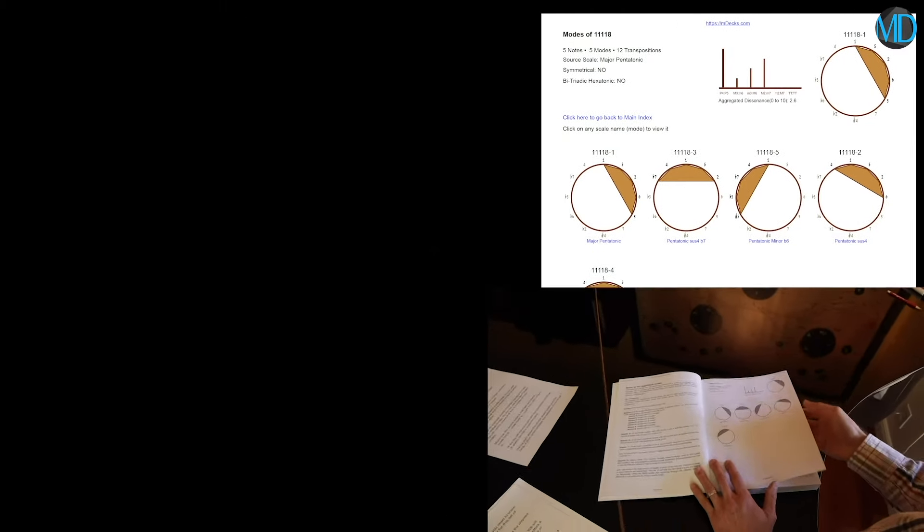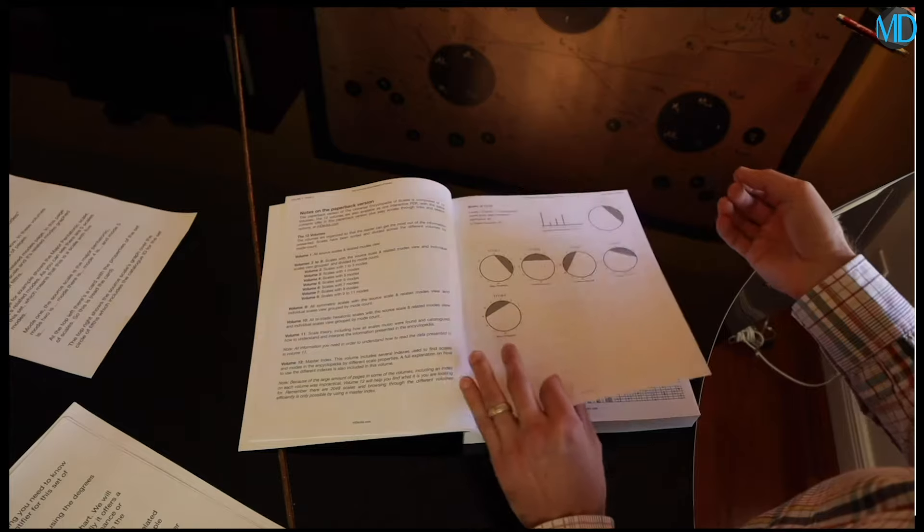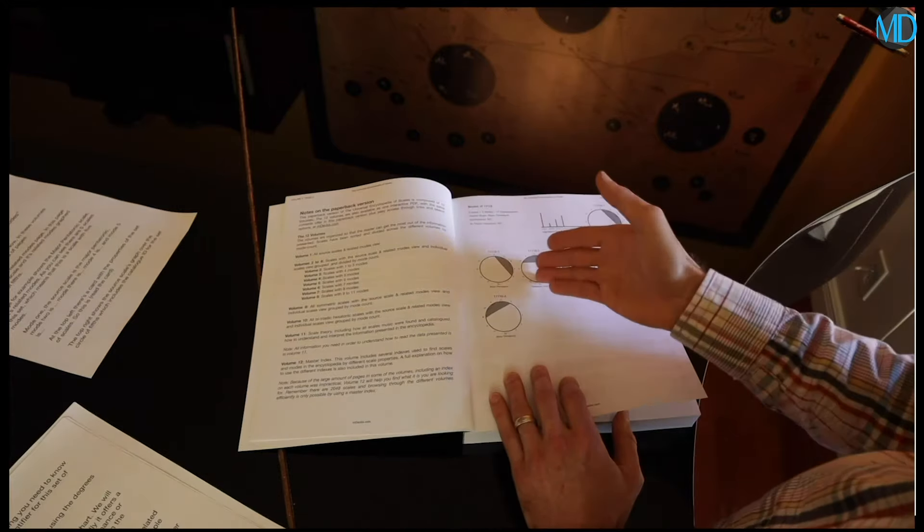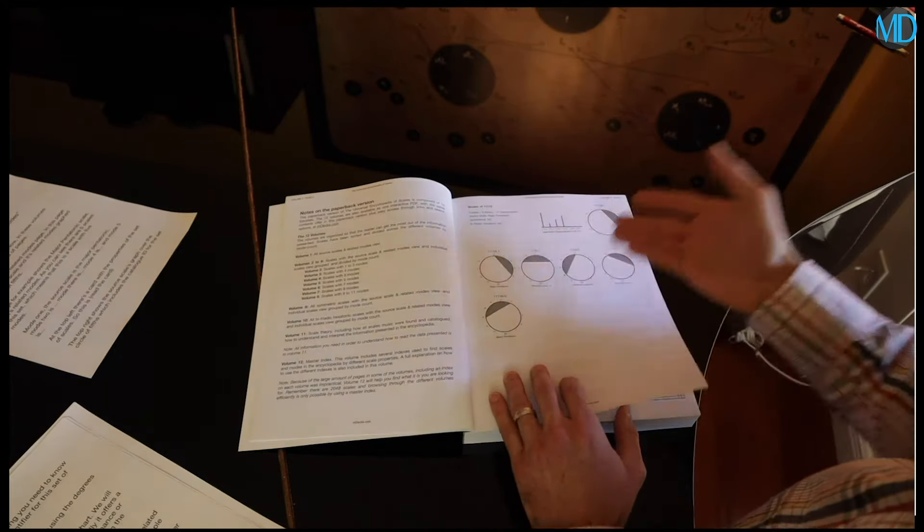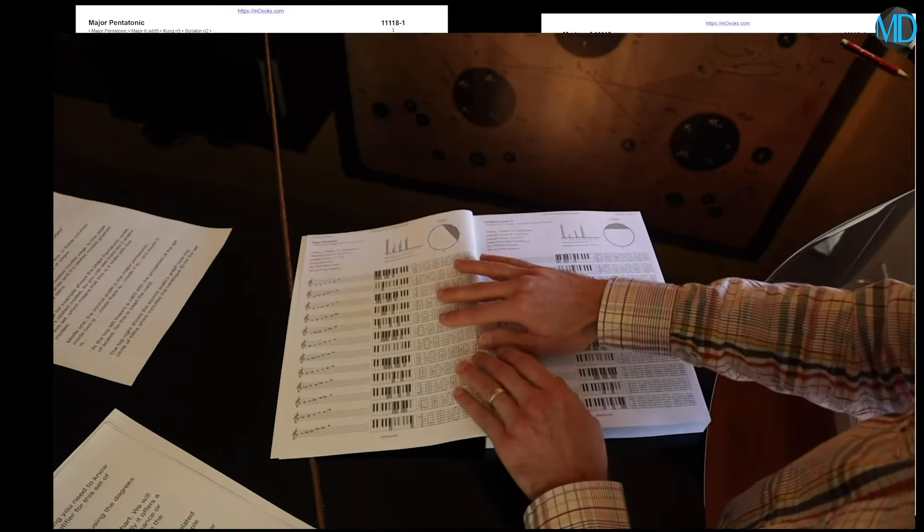Let's look at the other type. So, the next five pages of our encyclopedia will contain this second type. Basically, each scale that we just talked about, or each mode of the source scale, will be represented on the following five pages. So, here is what that would look like.